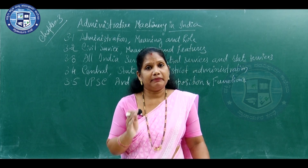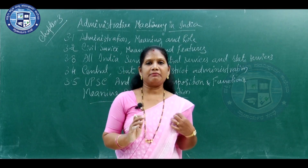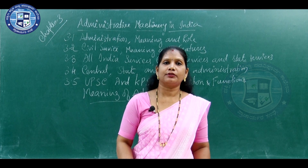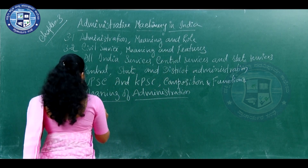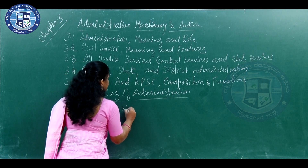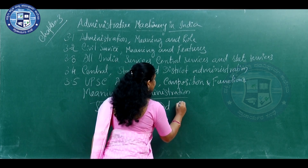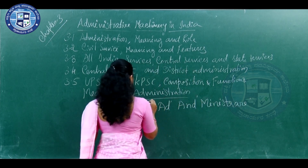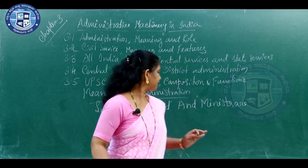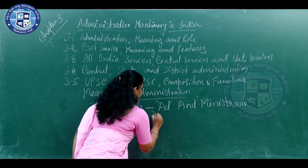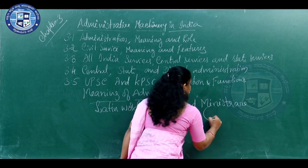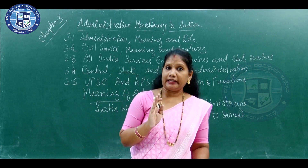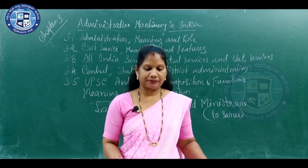Let us now understand the meaning of administration. The English word 'administration' is derived from two Latin words: 'ad' and 'minister'. Here, 'ad' means public and 'minister' means to serve. In this way, the real task of administration is to run the government and look after the people.